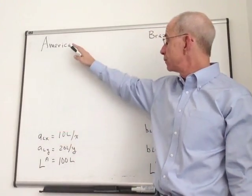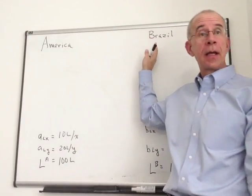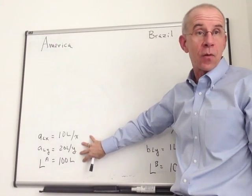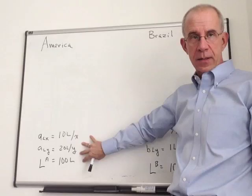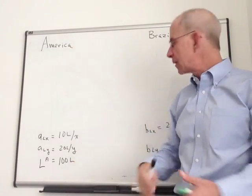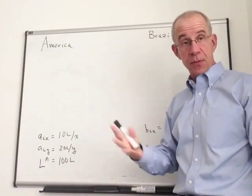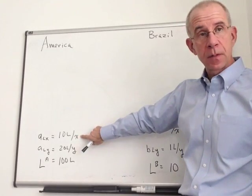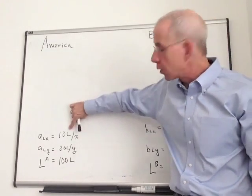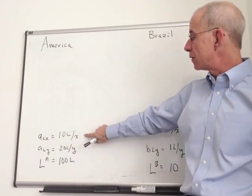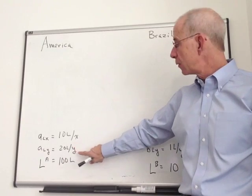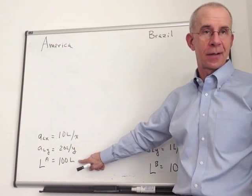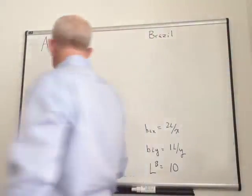I'm going to have two countries here, America and Brazil. We're going to start with these assumptions about the unit labor coefficients for America, which means the number of workers it takes to produce the two goods, or at least one unit of the good. In America, it's going to take 10 workers, 10L, for every unit of X, and 20 units of labor for every Y. I'm going to assume that there's 100 units of labor in country A, i.e. America.